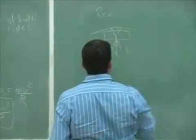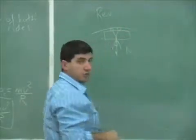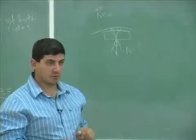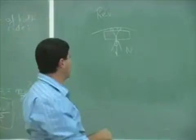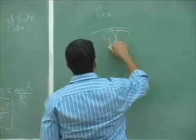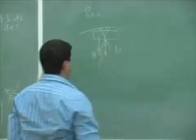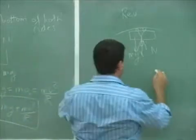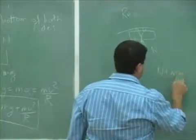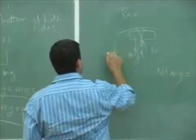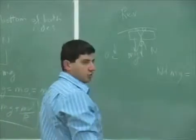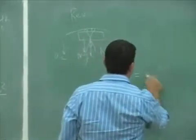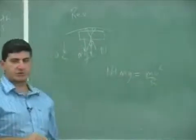The normal force is down — whatever is pushing you down is the normal force. The seat is above you, and you have your weight mg, and then n plus mg. They're both down, and acceleration is down also towards the center of the circle. mv squared over r.